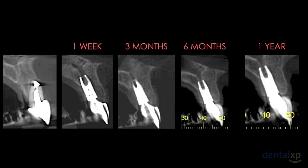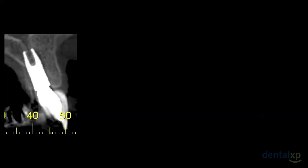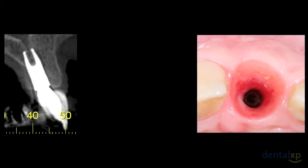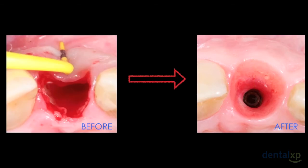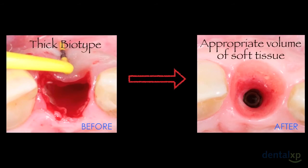Let's compare the thickness, stability, and the reconstructed bone seven days after the IDR procedure and one year later. The soft-tissue cone beam CT shows the thickness of hard and soft tissue — note the buccal bone above the implant platform and the thickness of soft tissue. The thicker the buccal bone wall, the better the final soft tissue volume. We had a thick biotype and now we have an adequate volume of soft tissue.